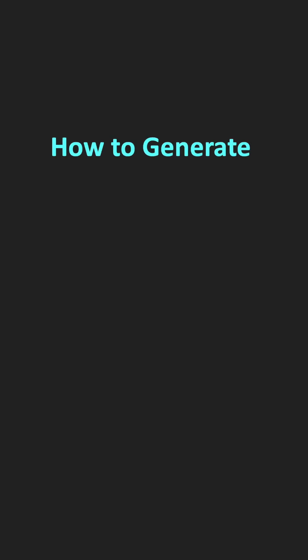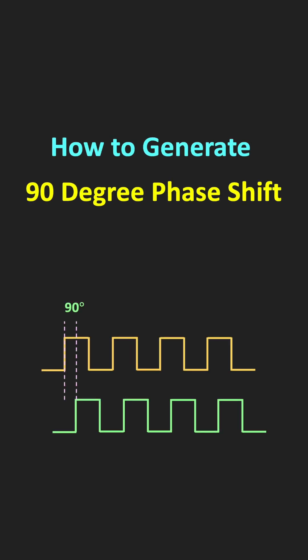In this short video, let us see how to generate the 90-degree phase shift between two digital signals using flip-flops.